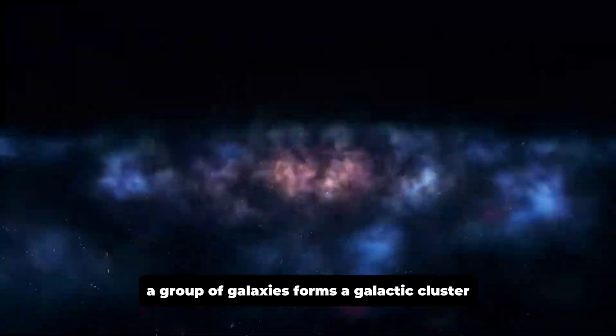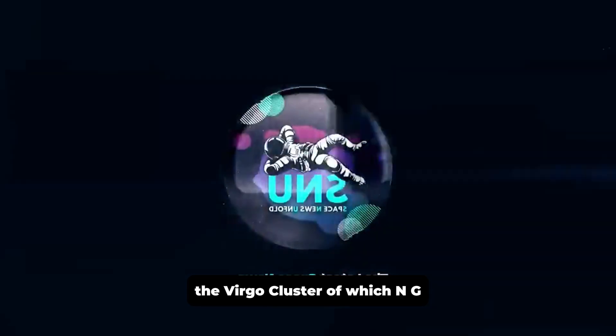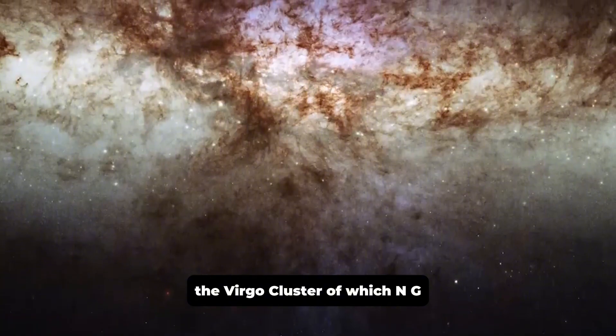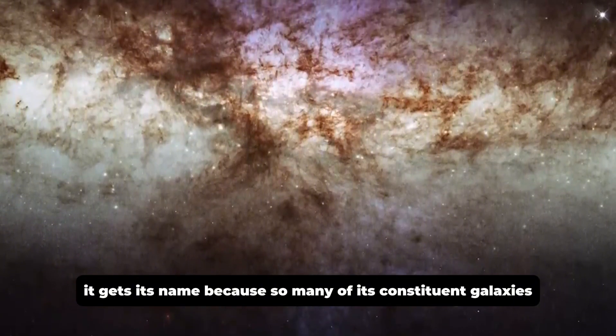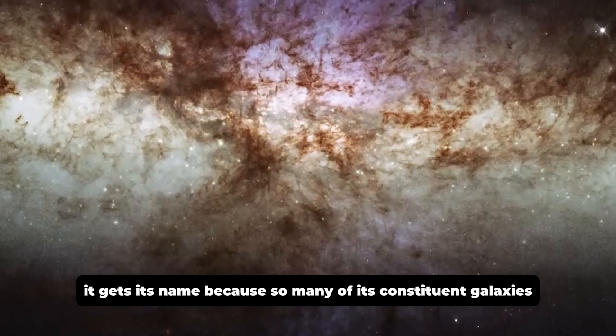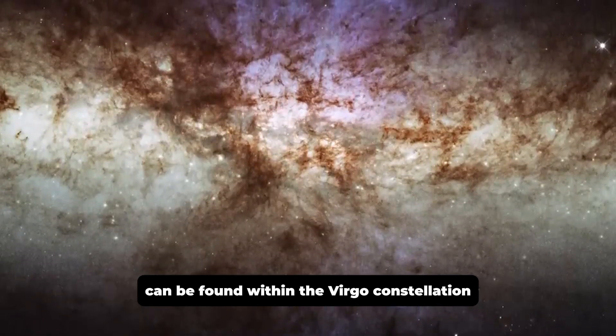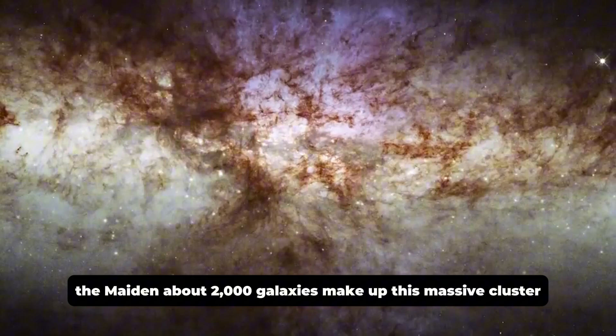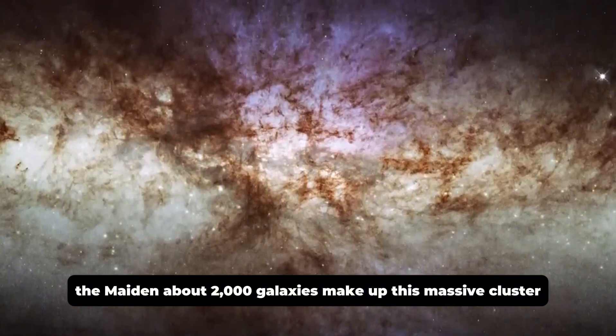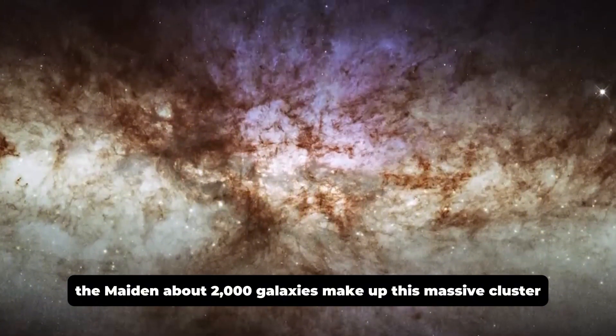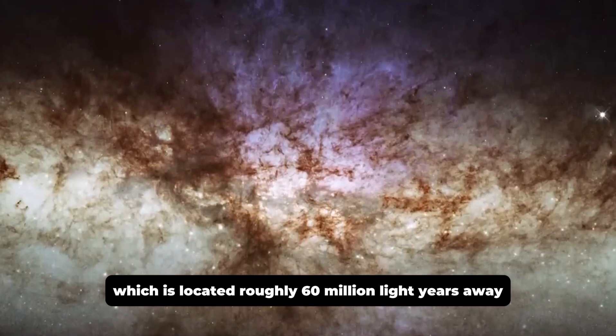A group of galaxies forms a galactic cluster, the Virgo Cluster, of which NGC 4452 is a component. It gets its name because so many of its constituent galaxies can be found within the Virgo constellation, the Maiden. About 2,000 galaxies make up this massive cluster, which is located roughly 60 million light-years away.